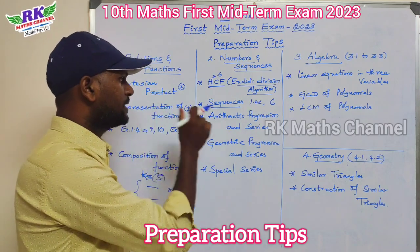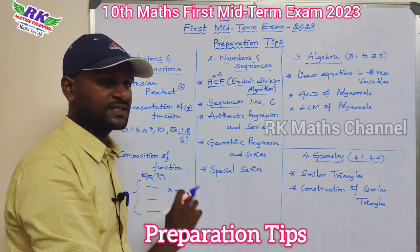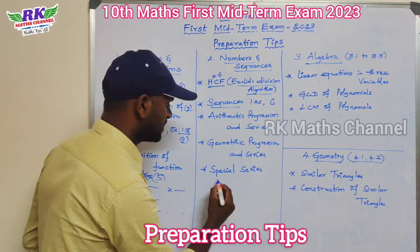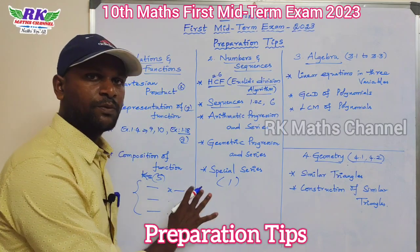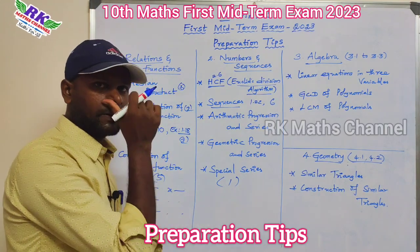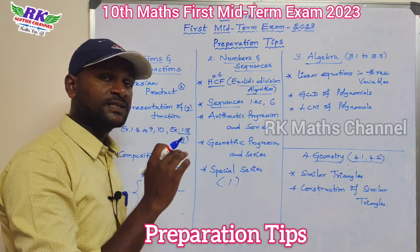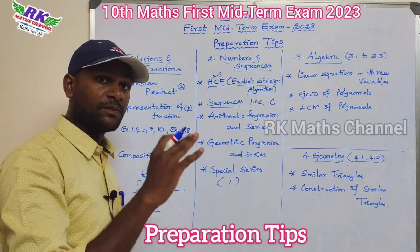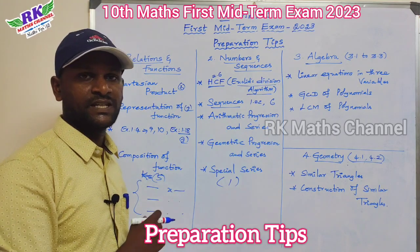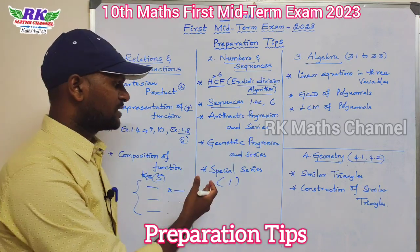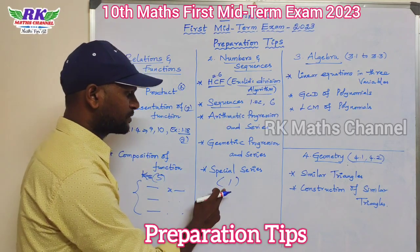That's Arithmetic Progression and series, Geometric Progression series, and Special Series. First, I will tell you: the Special Series is very important. Confirm — sum of first n natural numbers, sum of squares of first n natural numbers, sum of cubes of first n natural numbers. Those are the formulas for the special series, and there are five marks for this topic.